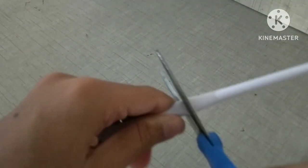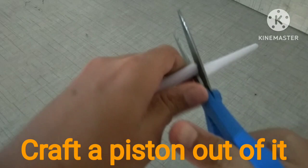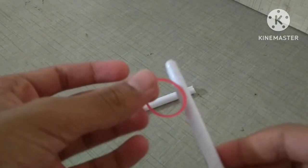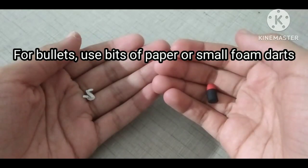We will cut the smaller roll of paper and craft a piston out of it using a rubber band. For bullets, we can use bits of paper or small foam dots.